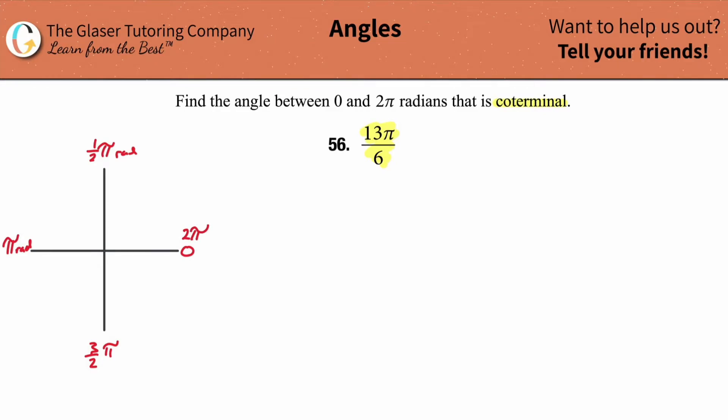And we can keep going, right? This would then be 2.5π, or 5 halves or however you want to write it. It doesn't really matter.